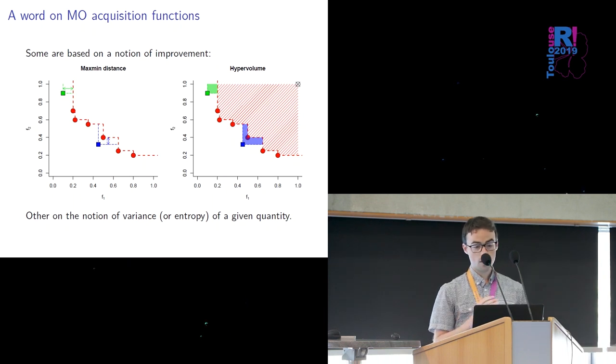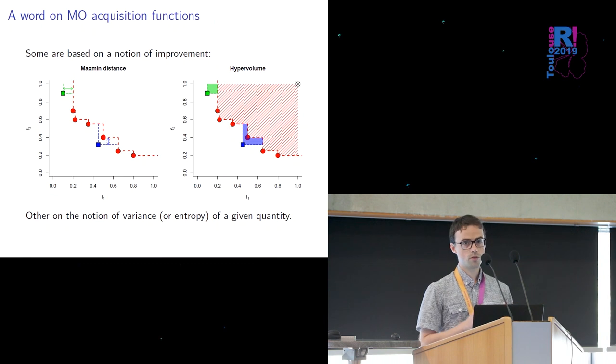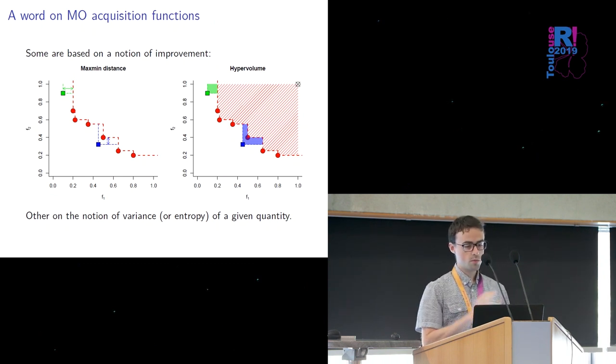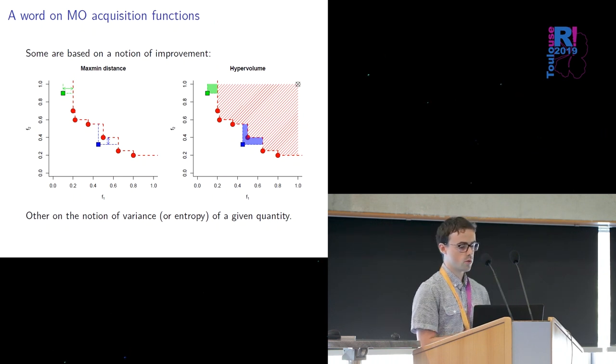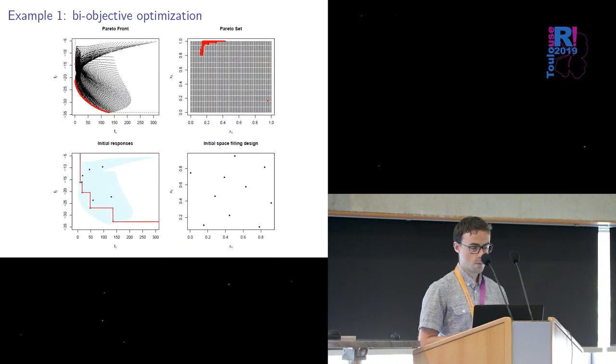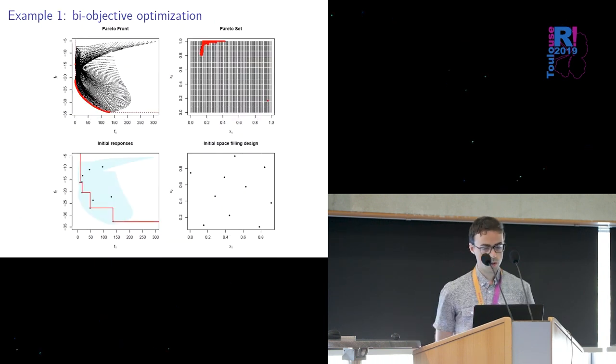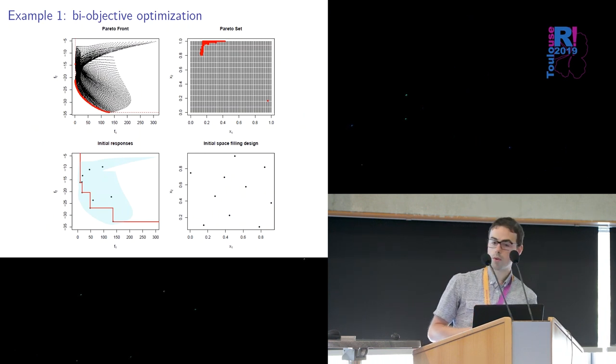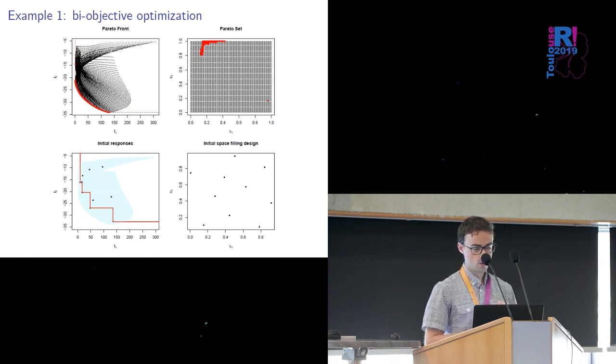How do we select points we design acquisition functions and they are based sometimes on the notion of improvement how do you improve an existing Pareto front it can be a maximum distance on existing points it can be a volume you add to the existing Pareto front or there are also notions of variance or entropy that you can use. So now is a simple example of the two objective optimization problem so in red the true Pareto front on the left and the true Pareto set on the right so we start with five to ten observations and as you can see the approximation on the bottom left is not that good.